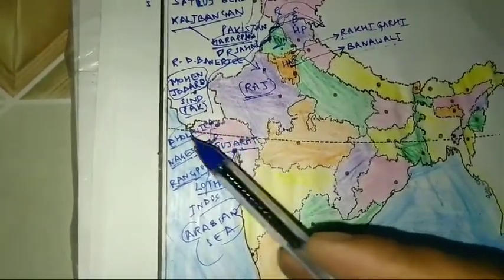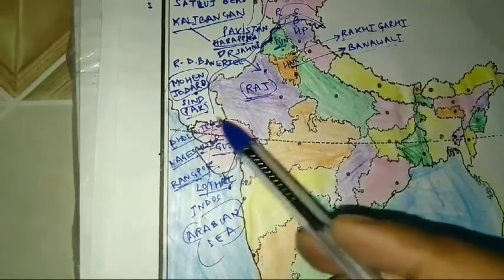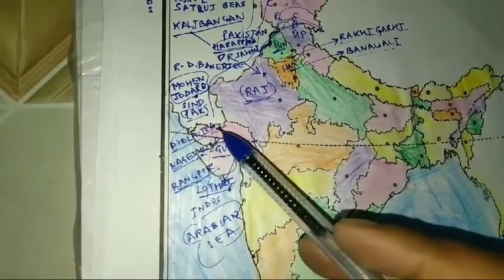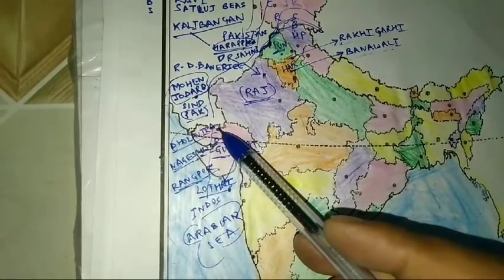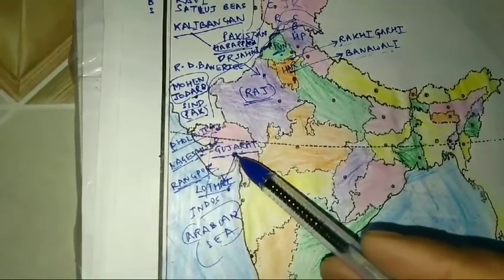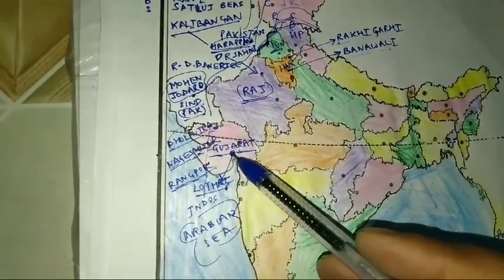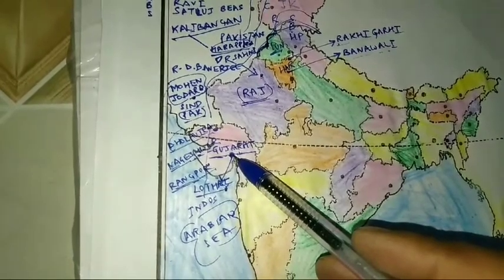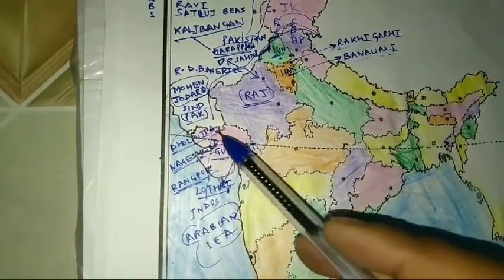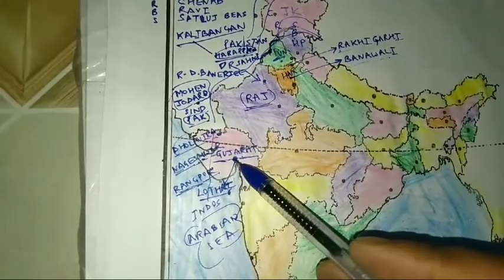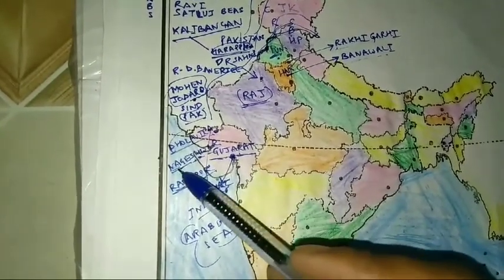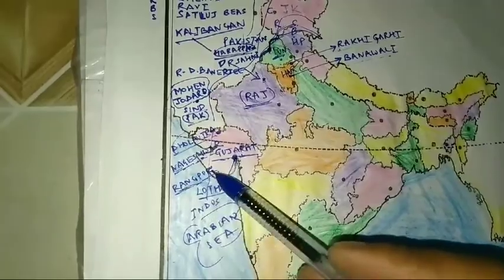Gujarat looks like a lion opening its mouth. There is a cut here. In the upper area you can locate Dholavira, and in the lower portion — the neck area of the lion — is Lothal. Two more bead-making centres are Nageshwar and Rangpur.